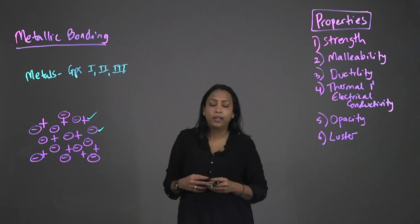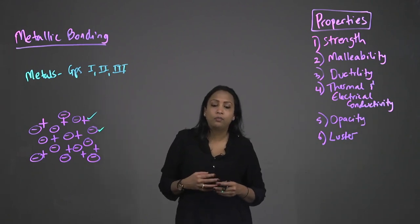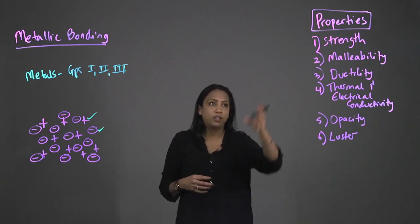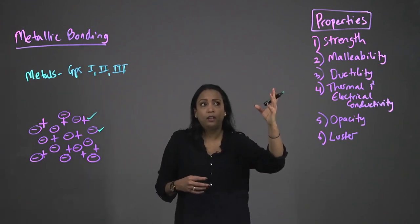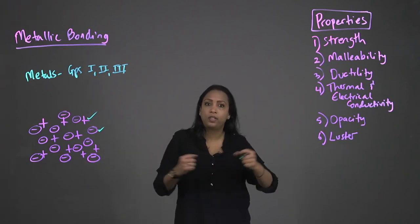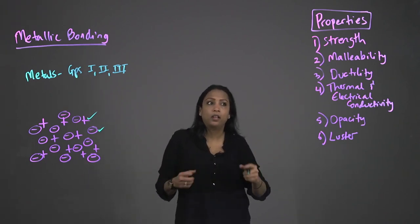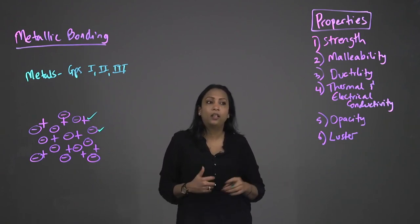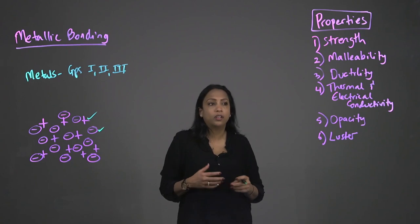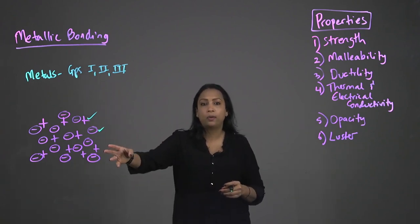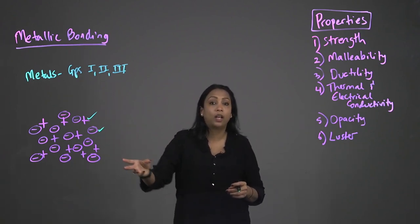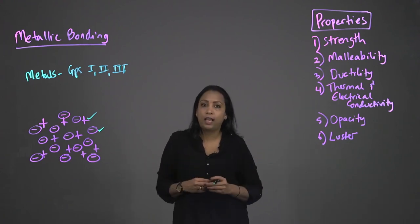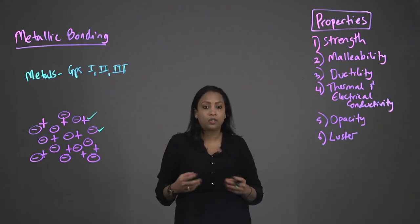Metallic bonding accounts for many physical properties of metals such as: strength, malleability — that's the ability to bend — ductility — that's the ability to stretch without breaking easily — thermal and electrical conductivity, again due to the delocalized sea of electrons, and opacity and luster — the ability to shine.